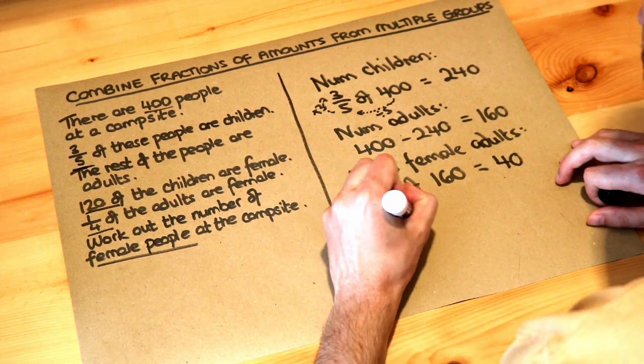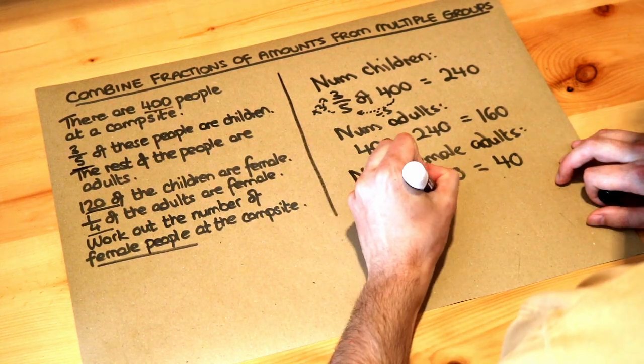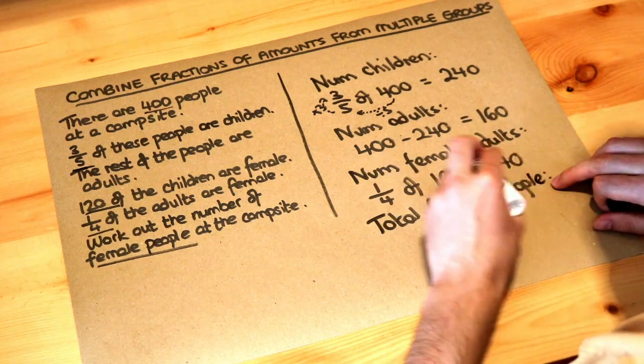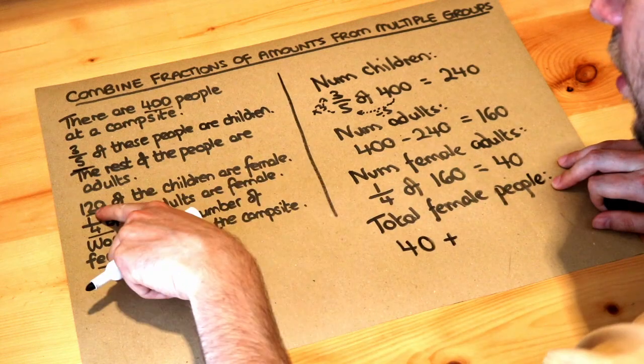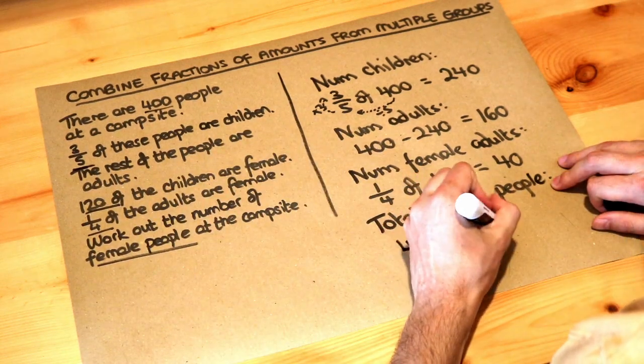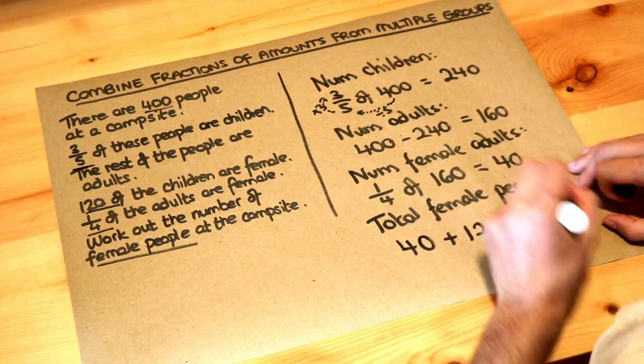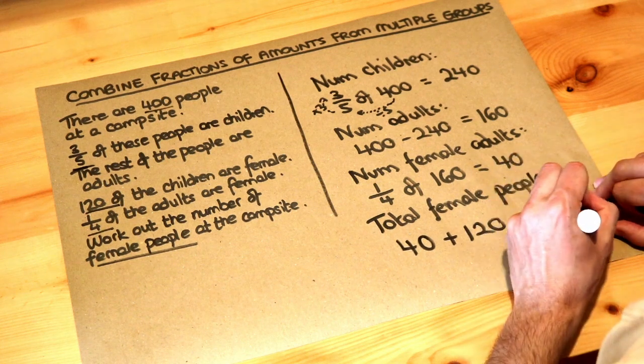So the total number of female people is where you've got the 40 female adults and you've got the female children which you've got 120 of them, and when you add those together you get 160 as the answer.